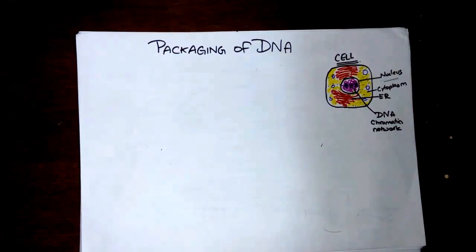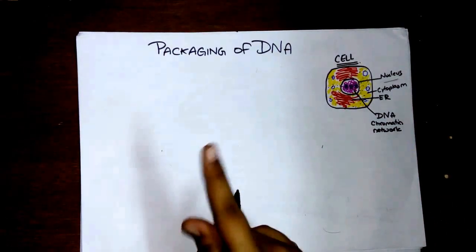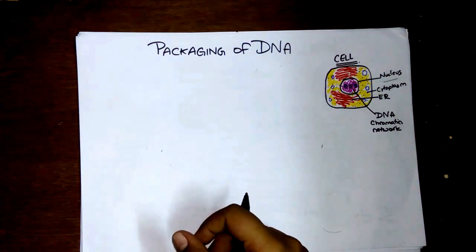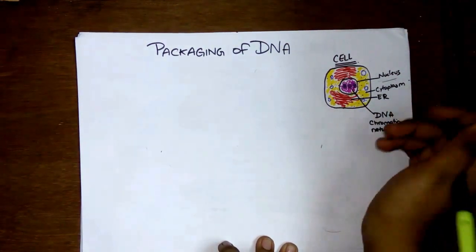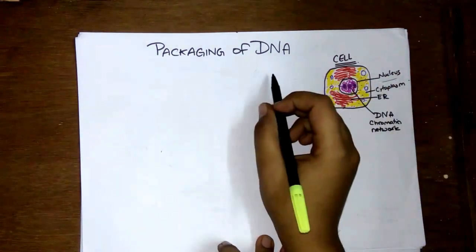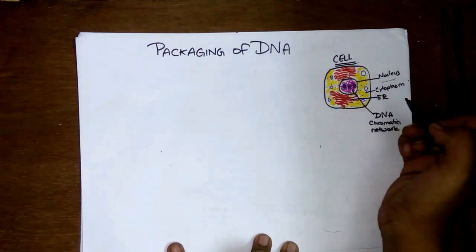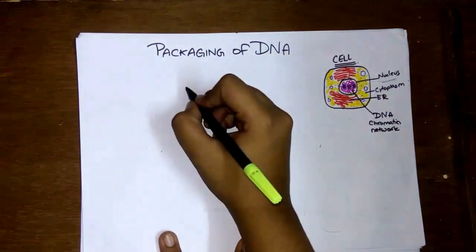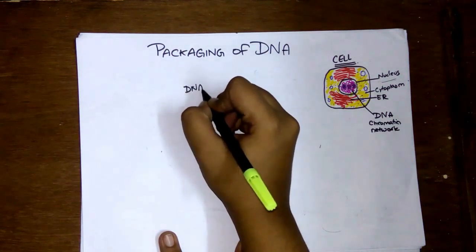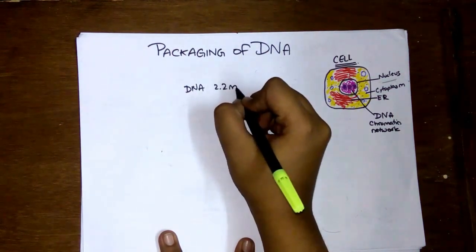In this video I will be talking about the packaging of DNA. We know that the cell has a nucleus and all the DNA present is inside the nucleus, but in an average human being the DNA is around 2.2 meters long.